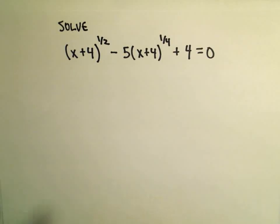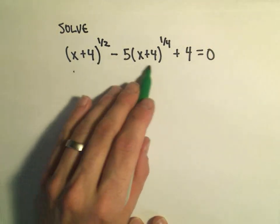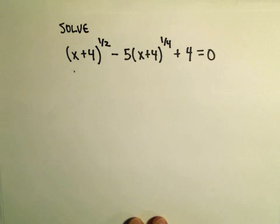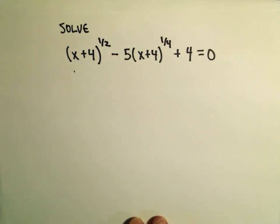The first thing to really notice, the thing that sticks out to me on these problems that I recognize, notice we sort of have some x's to a power, we have some x's to a power, and we just have a number hanging out. So right now we have one, two, three terms, which is very common for quadratic equations.